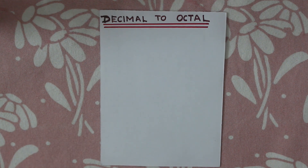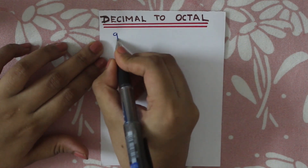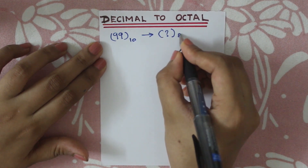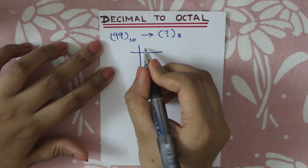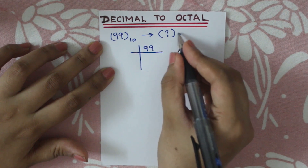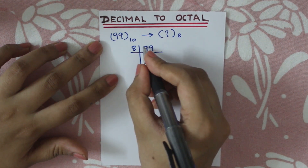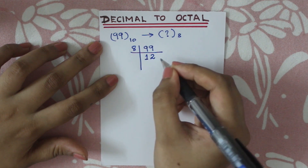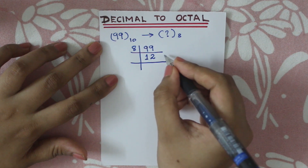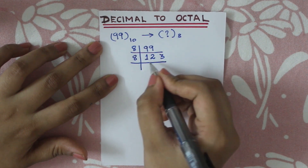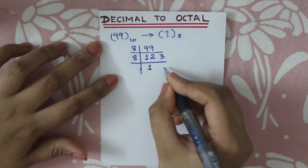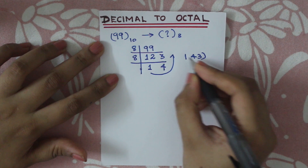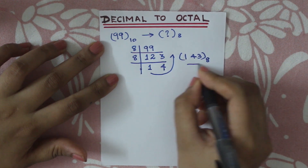Now let's say 99 is our decimal number and we want to convert it to octal. We divide by the base 8: 99 divided by 8 is 12 remainder 3. Then 12 divided by 8 is 1 remainder 4. Then 1 divided by 8 is 0 remainder 1. Reading remainders bottom up, the octal equivalent is 1, 4, 3.